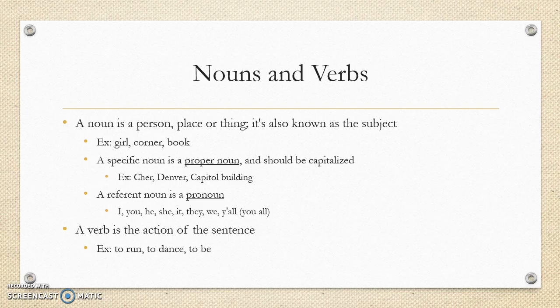A noun is a person, place, or thing — you might also think of it as the subject. Examples are a girl, a corner, a book. There are also proper nouns, which refer to a specific person, place, or thing. For example, Cher is a specific woman, Denver is a specific place, and the Capitol Building is a specific thing. Proper nouns are capitalized — so Missouri State University campus would be capitalized.